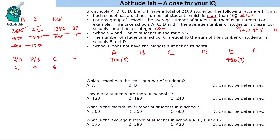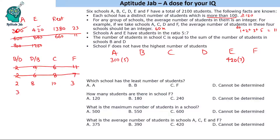Checking combinations: if B and D are 2 and 4, then C = 6, and F = 23 − 12 = 11 — but F would be the highest, which is not allowed. Trying B=2, D=6: C=8, F=7 — but 7 is already taken. Trying B=2, D=8: C=10, then 2+8+10+F=23 → F=3. This works! Next, trying B=2, D=9: C=11, 2+9+11=22, F=1 — too small.